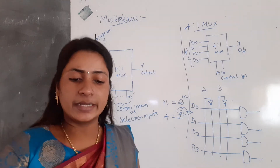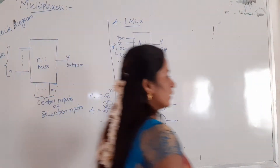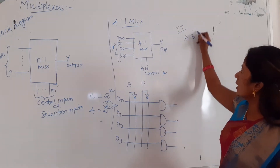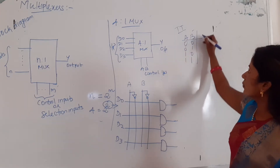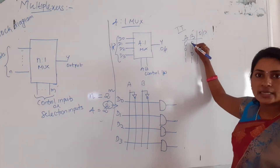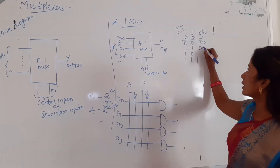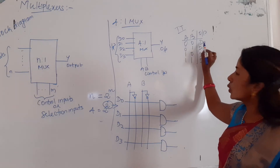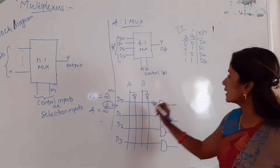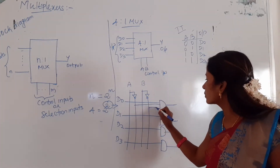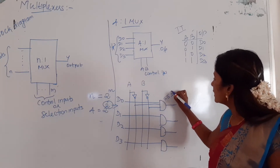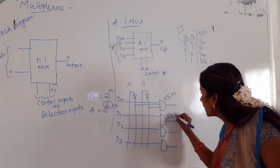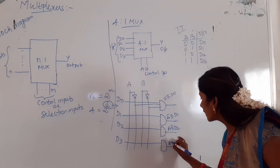The inputs of the AND gates are derived from the control input combinations A, B: 00, 01, 10, 11. The first AND gate inputs are A-bar, B-bar, D0. The second is A-bar, B, D1. The third is A, B-bar, D2. The fourth is A, B, D3. This completes all 4 AND gates.